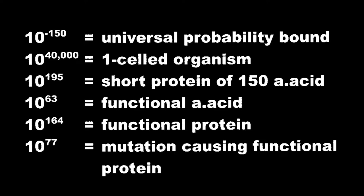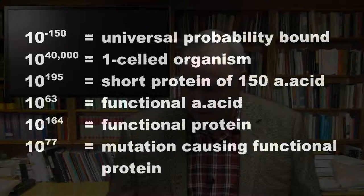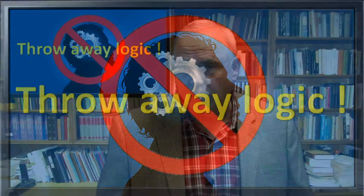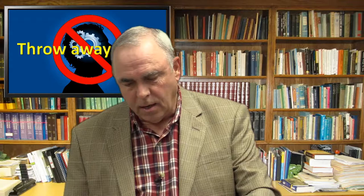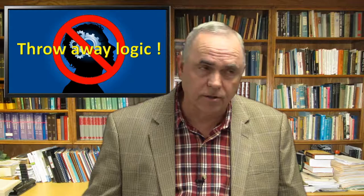Let's summarize: universal probability bound 10 to the negative 150th; one-celled organism 10 to the 40,000th; one short protein of 150 amino acids 1 in 10 to the 195th; one functional amino acid sequence 1 in 10 to the 63rd; one functional protein from prebiotic soup 1 in 10 to the 164th; mutation causing functional protein 1 in 10 to the 77th. If you're still going to rely on chance as the cause after looking at numbers like that, you've thrown away any semblance of logic. Evolutionists don't have the answers to the origin of life, and yet they still hold to it because they're naturalists — but it's illogical.